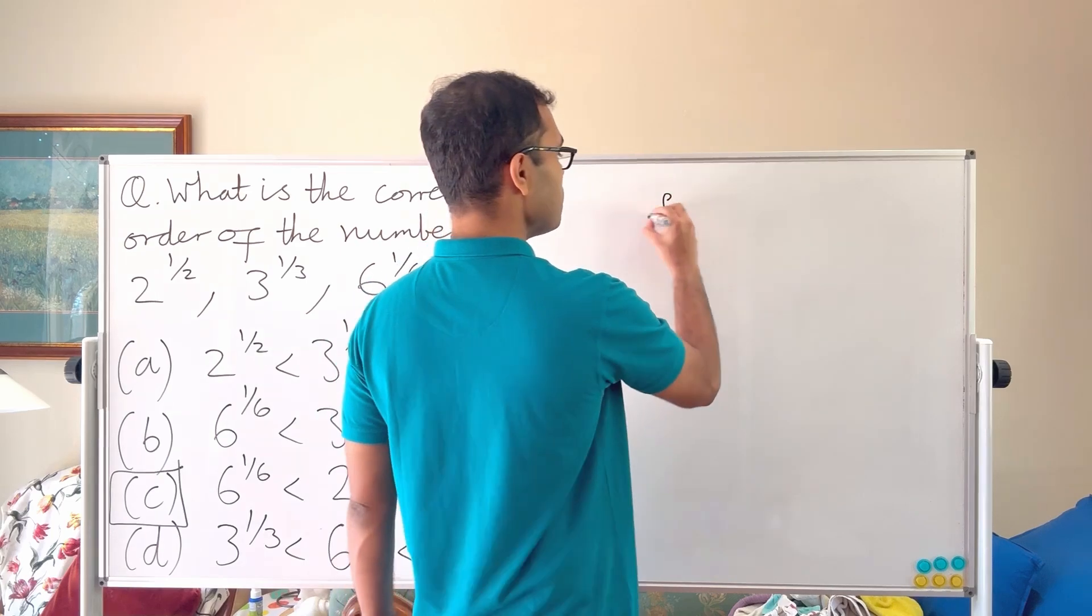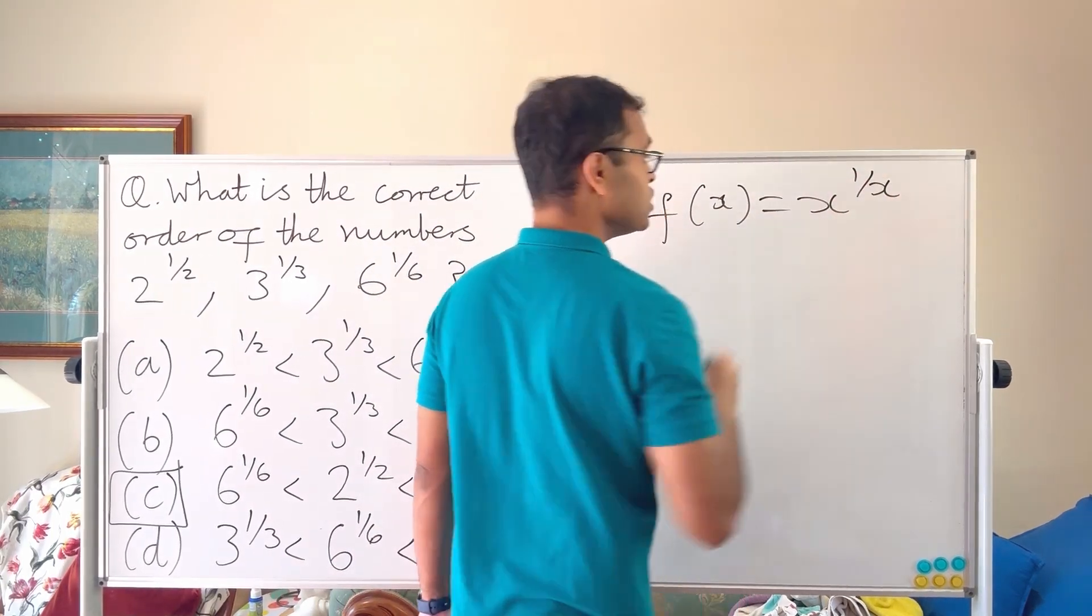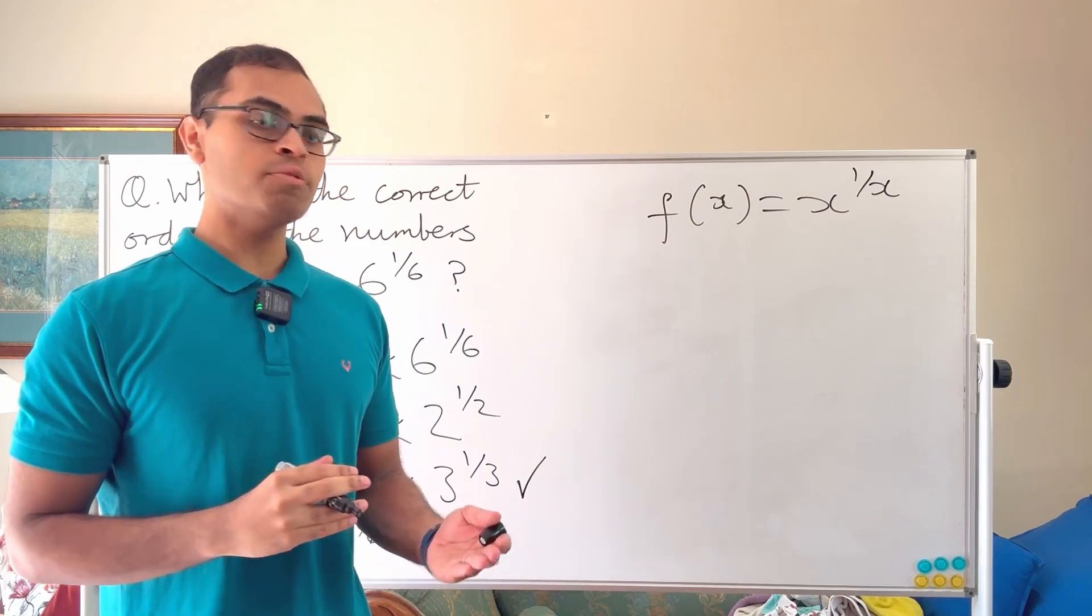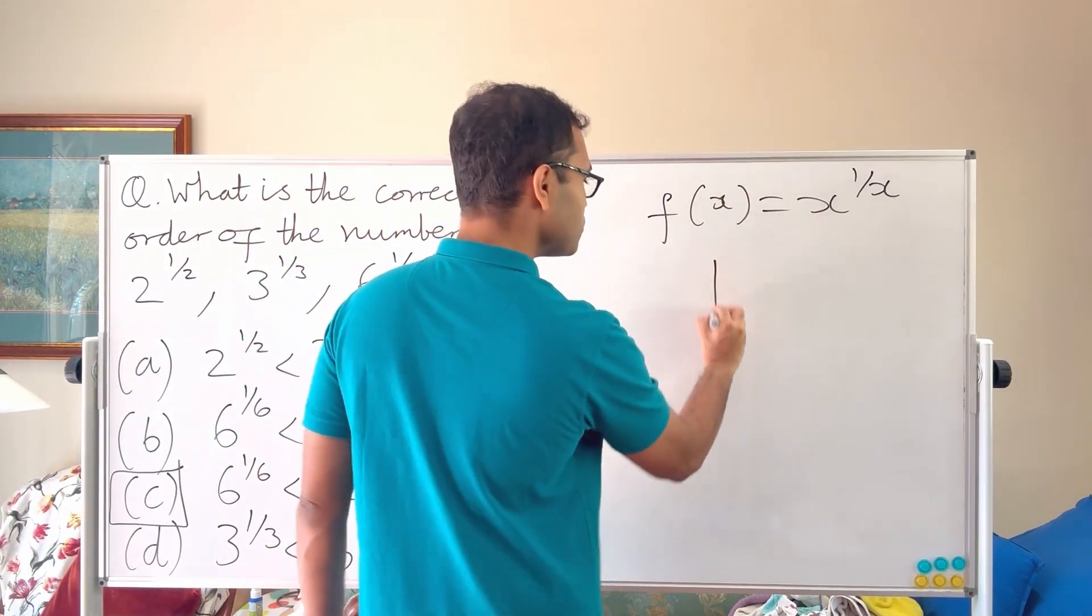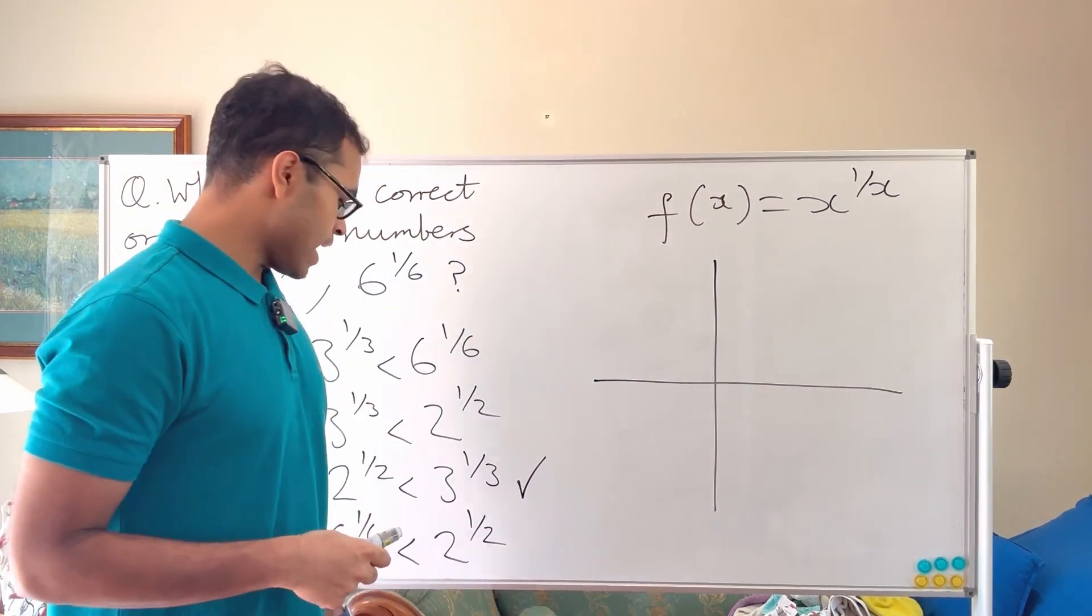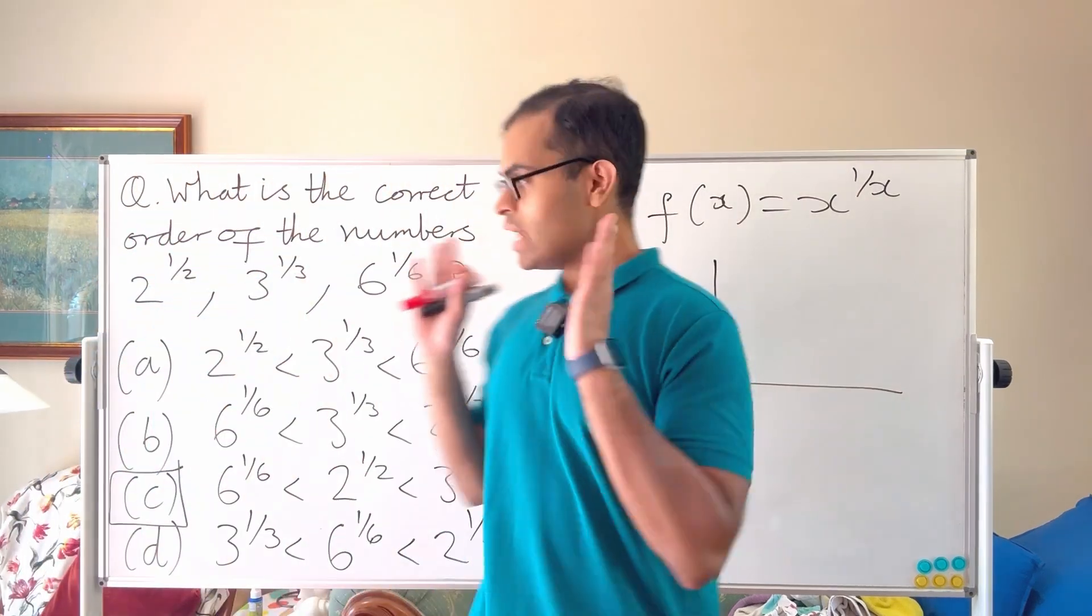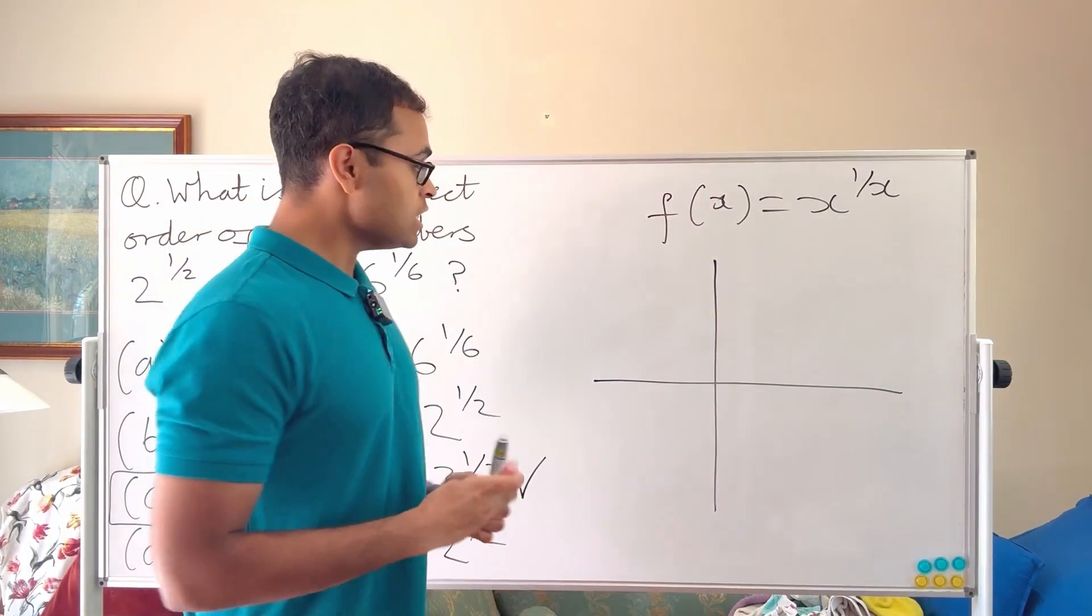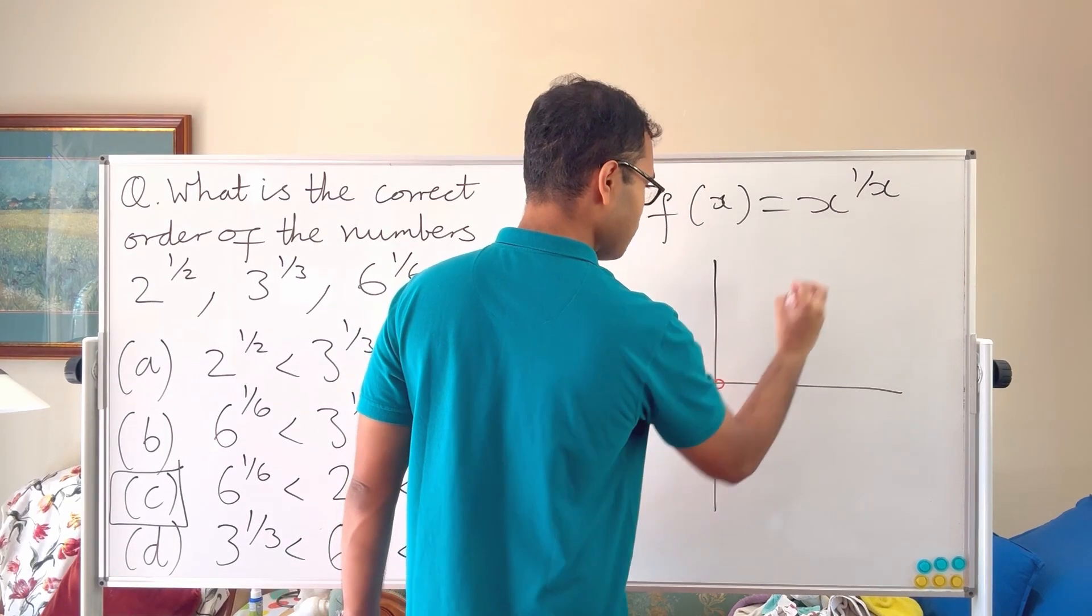The glimpse is that if I look at the function which is f of x equals x power one over x - now if you're not familiar with functions don't worry, it's just an input and an output. X is the input, x power one over x is the output. I can graph this function to give me an idea of what the numbers look like as x equals 2, x equals 3, x equals 6, which are the numbers we played around with in this problem. But in general what it looks like is something like this.